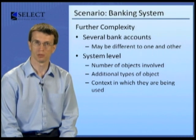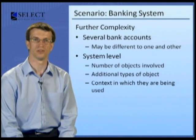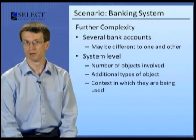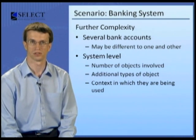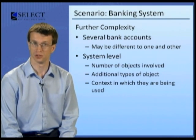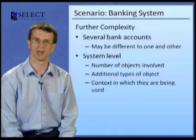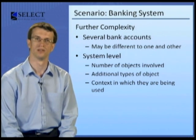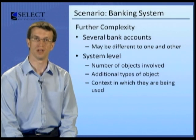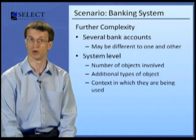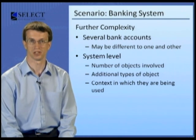For operations to be common between types, it's important that their behaviour has the same meaning. For example, a banking system might allow users to get the balance of their account, whereas a book ordering system might allow users to get the price of a book. In both cases a monetary value is returned, but they have different meanings. One of them is a bank account indicating the amount of money which may be withdrawn; the other is a book indicating the amount of money for which it may be purchased. It's important to recognise and retain these differences in meaning.